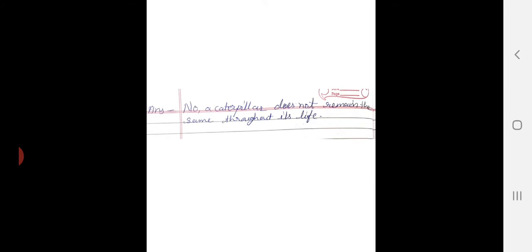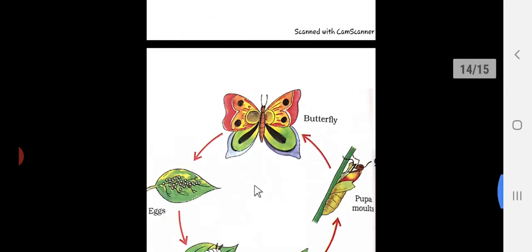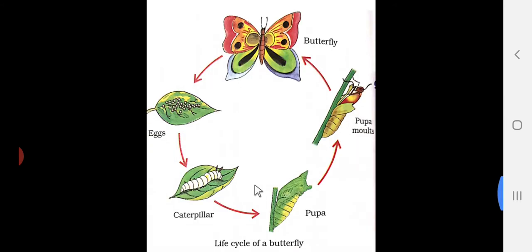Let's see the diagram. First stage is the egg, then the caterpillar. The caterpillar changes to a pupa, and then changes into a butterfly. This diagram shows the complete life cycle.